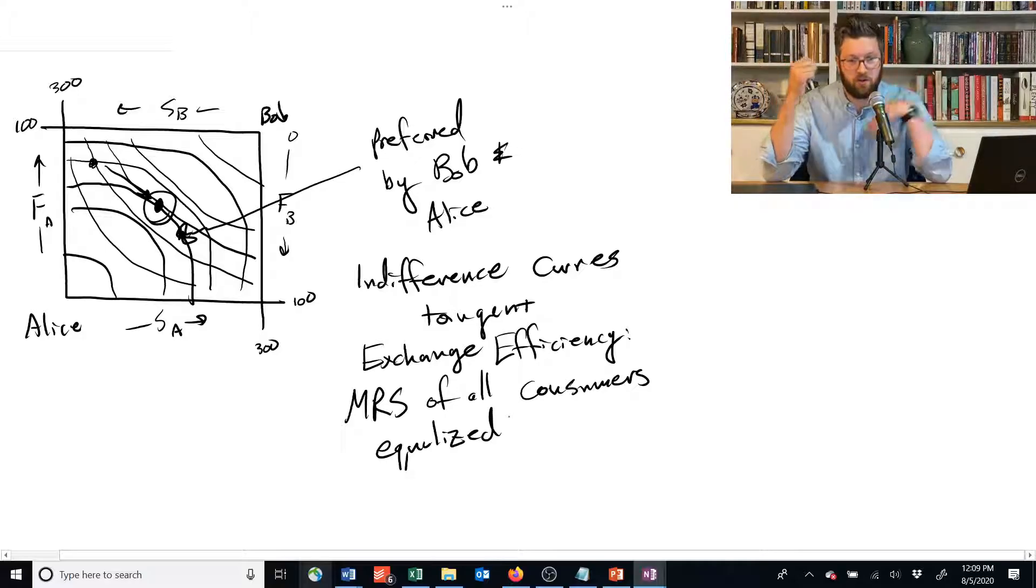When that occurs, you've got exchange efficiency. And I could do the same kind of argument I did before. If we zoom in on this, if I give a little bit more food to Alice, I slip down below Bob's indifference curve. So we can't do that without making him worse off.